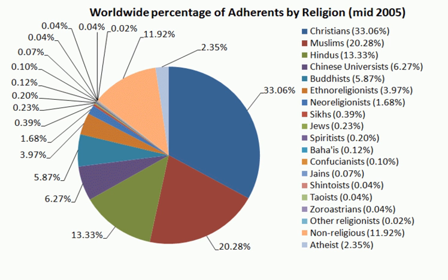According to Gavin Flood, the modern period in India begins with the first contacts with Western nations around 1500. The period of Mughal rule in India saw the rise of new forms of religiosity.